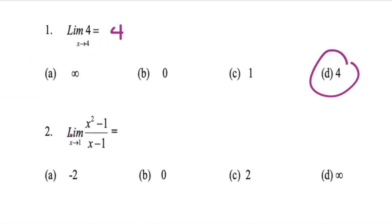We have the limit as x tends to 1 of x squared minus 1 over x minus 1. Now, if I substitute 1 into the numerator and the denominator, 1 squared is 1, so 1 minus 1 is 0, and 1 minus 1 is 0. So in this case, we have to factorize in order to find the limit.